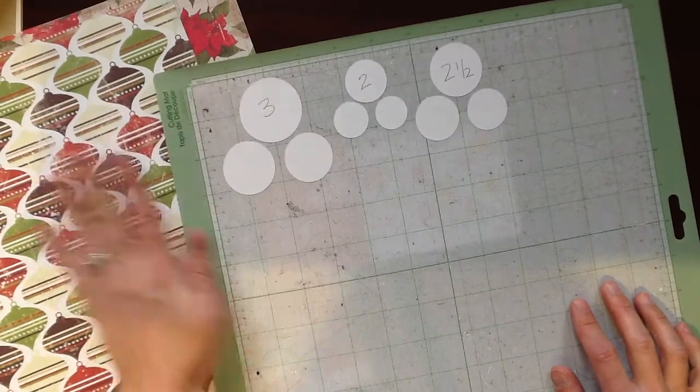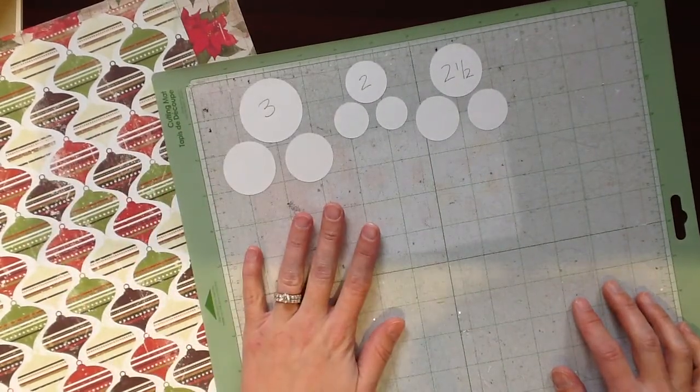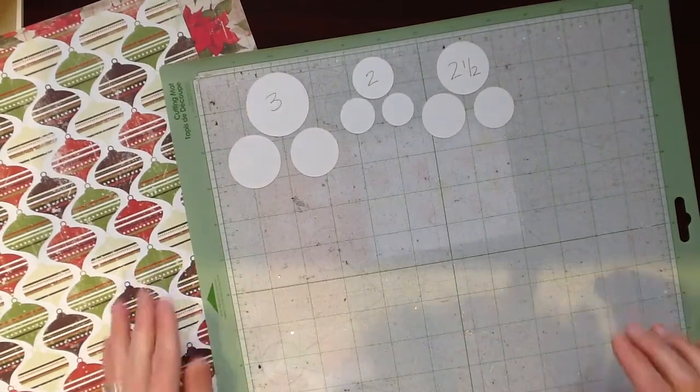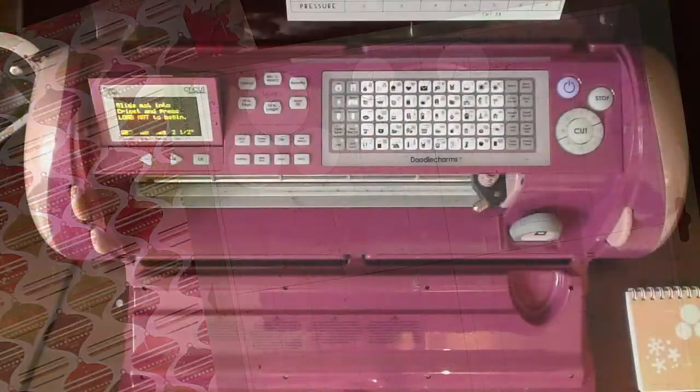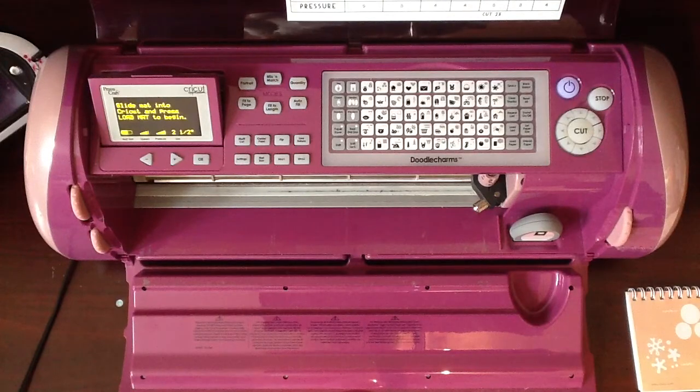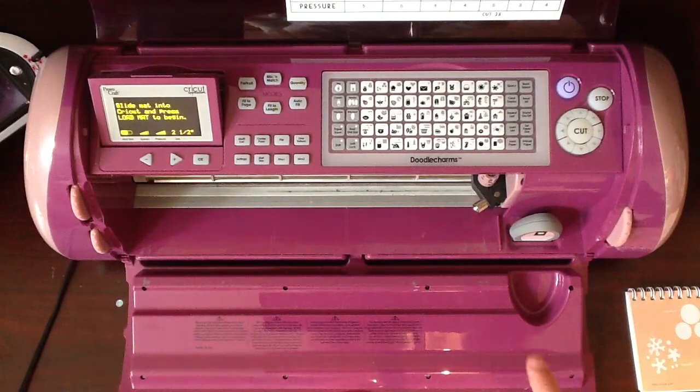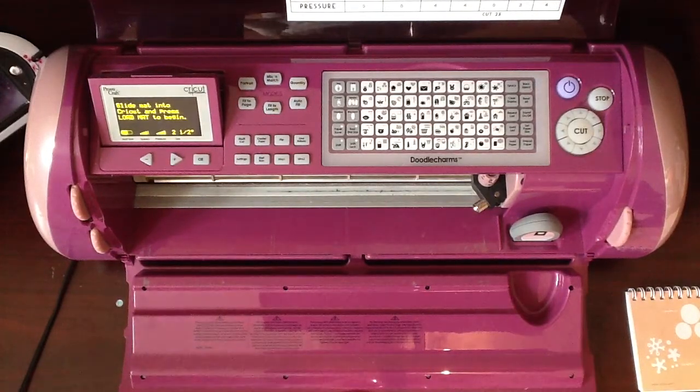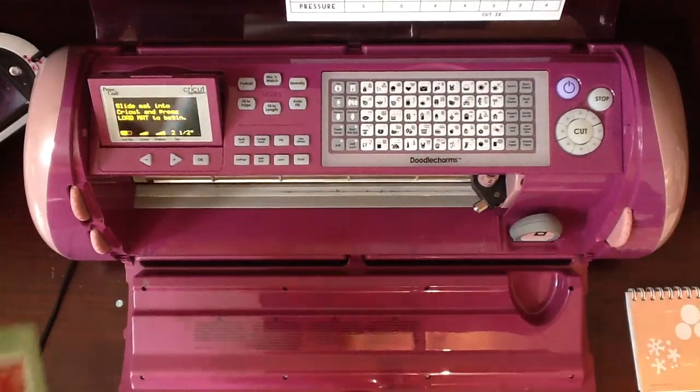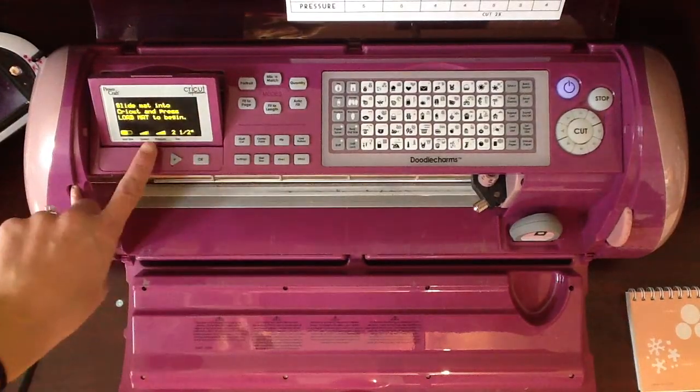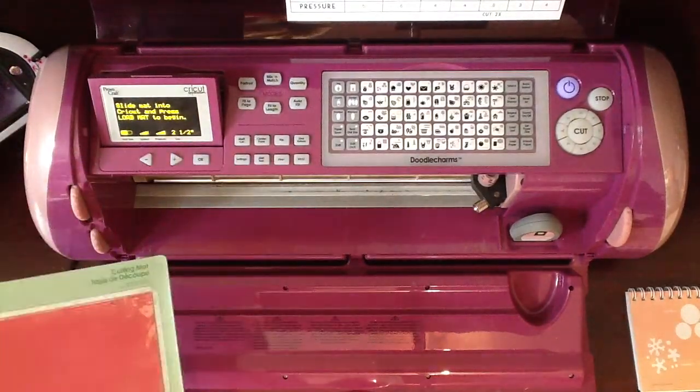So I'm going to put the paper on my mat, and I'll show you over at my Cricut how I'm going to get this cut. Okay, so I have my Cricut all set. I have the Doodle Charms cartridge loaded, and I have my keypad on. And I've got it all turned on and ready to go. As you can see, I already have it sized to two and a half because that was the last size that I picked.